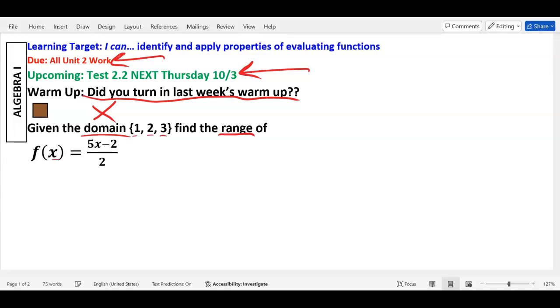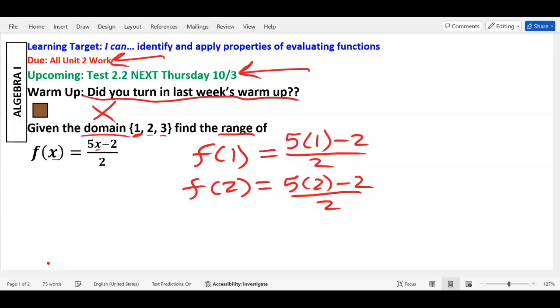If the domain is one, two, and three, you're going to replace the X's in that function with one, two, and three. So f of one - you replace X with the first one and rewrite it with a one in parentheses. Instead of 5x minus 2, it's 5 parentheses 1 minus 2 over 2. We should be able to do that similarly with 2 and 3. So f of 2 is 5 parentheses 2 minus 2 over 2, and f of 3 is 5 parentheses 3 minus 2 over 2.